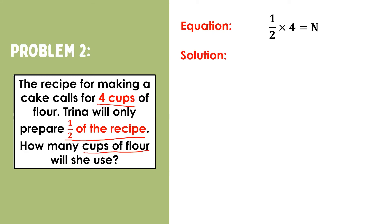Recall that in multiplying a fraction and a whole number, we multiply the whole and the numerator. So, we will have one times four, that is four. Then, we copy the denominator. Four-halves is an improper fraction, so we need to regroup. Four divided by two is two. Thus, Trina will use two cups of flour.